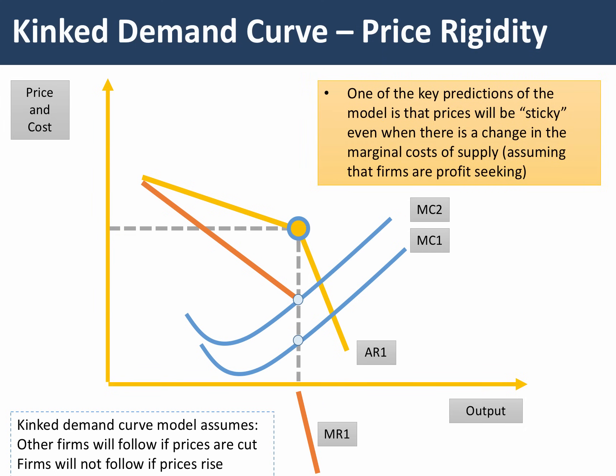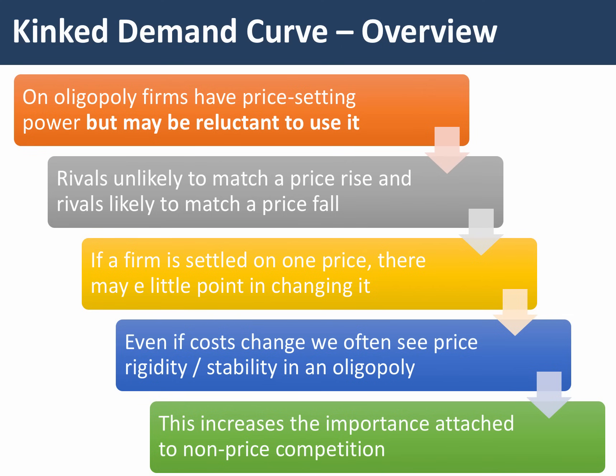If we shift MC1 to MC2 — perhaps due to an increase in the cost of important components, or a higher minimum wage — you can see that even this shift in the marginal cost of production doesn't necessarily cause a change in the profit-maximizing point. In overview: in this model, oligopoly firms have price-setting power but, because of interdependence, may be reluctant to use it. They're unlikely to match a price rise but quite likely to match a price fall, and there's little incentive to change price even if costs change.